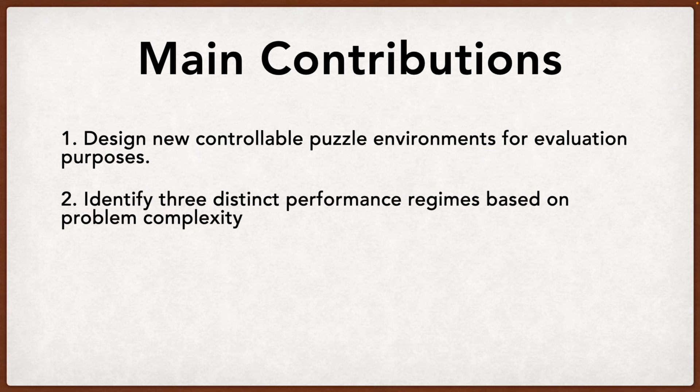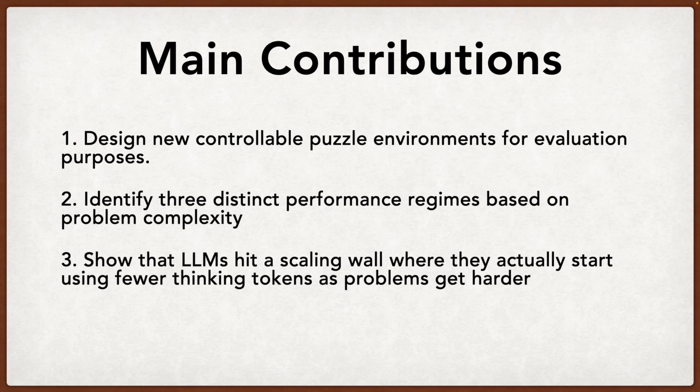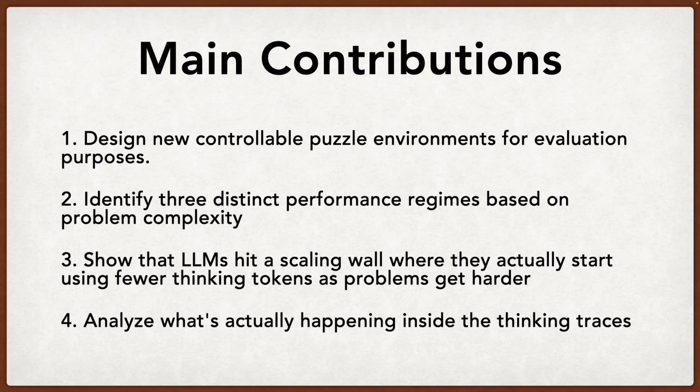Second, they identify three distinct performance regimes based on problem complexity. Third, they show that reasoning models hit a scaling wall where they actually start using fewer thinking tokens as problems get harder, which is counterintuitive. And fourth, they analyze what's actually happening inside the thinking traces to understand the reasoning patterns.